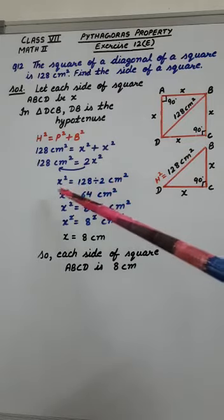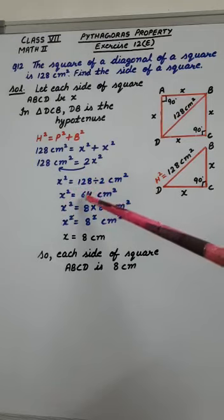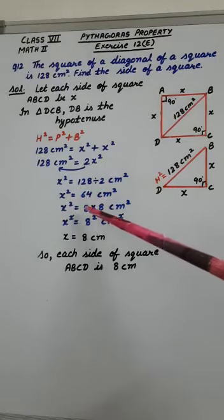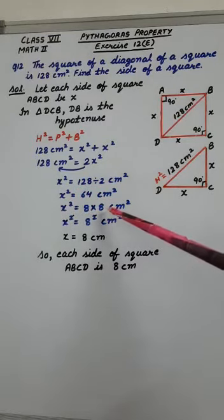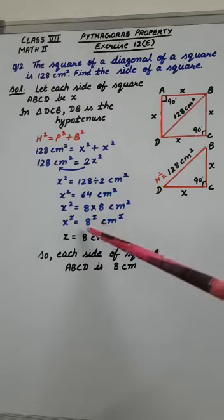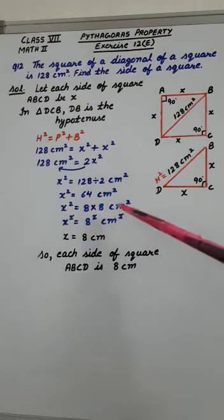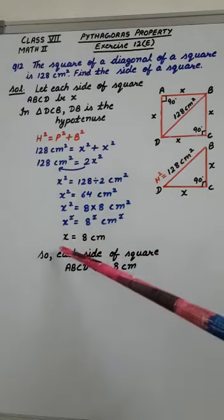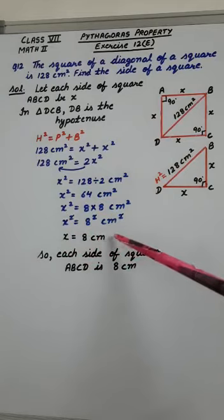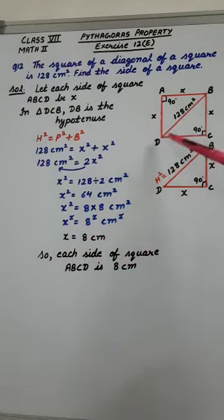Now we want to remove squares from here. So 64 can be written as 8 multiplied by 8. This can be written as 8 square. Now both sides we have square sign, so we can remove this square. So value of X is 8 cm. So that means each side of this square is 8 cm.